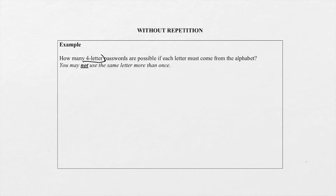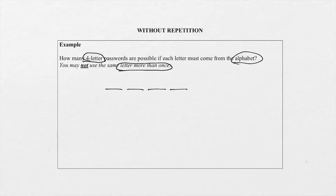Because we are looking for four-letter passwords, we're going to draw four lines that represent our four positions. We're going to use the 26 letters of the alphabet, but the important thing is the letters may only be used once, not more than once. So that means if the first letter is an A, we can't use A again. The first position has 26 possibilities. Whatever we used in the first position we can't use again, so the second position we only have 25 possibilities.